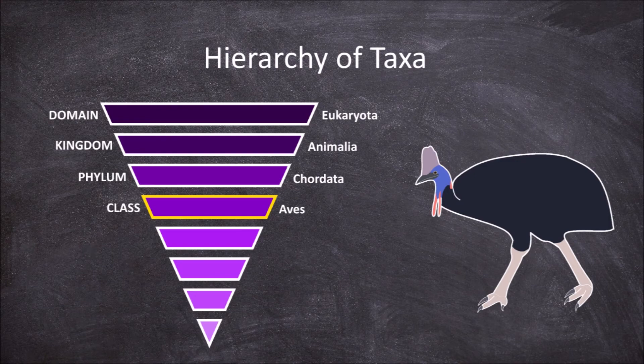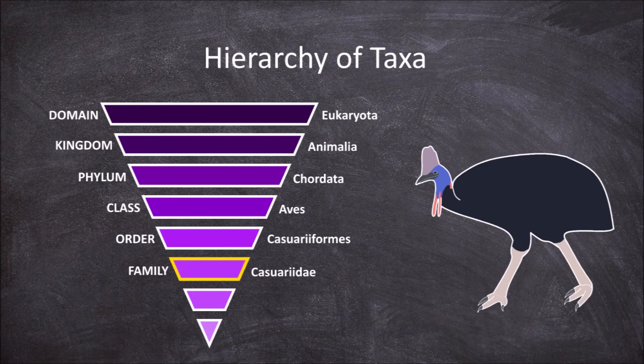The next even smaller hierarchical taxon is the order level. Our example belongs to the order casuariiformes. The next hierarchical taxon is the family level. The southern cassowary belongs to the family casuariidae.